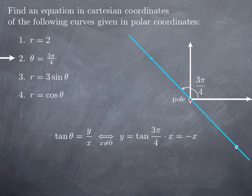The condition x=0 is not a problem, because when x=0, y is also 0 in the equation y=−x. Therefore we recover the pole, which is a point where we can pick θ=3π/4, because at the pole we can take any angle.